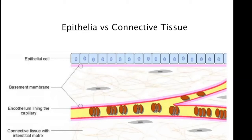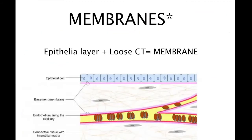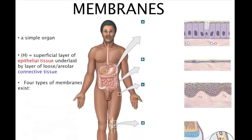When we talked about the different types of epithelial, this right here is a simple squamous cell — you can tell by the flattened nuclei. Underneath it all is some loose connective tissue. When you combine these two together, you're going to get a membrane. The definition of an organ is two or more tissue types working together to perform a common function. So a membrane is our simplest organ.